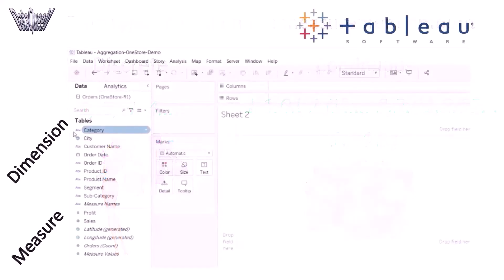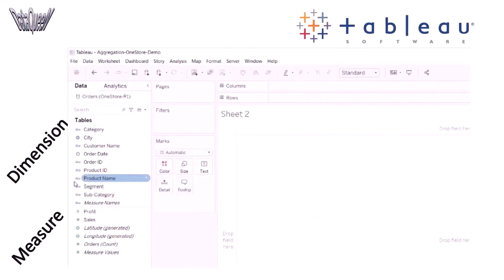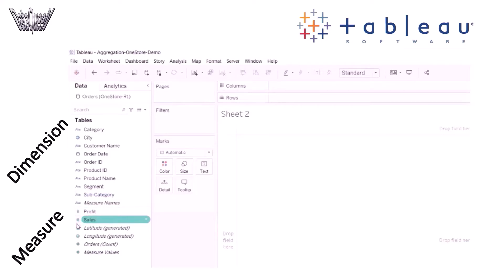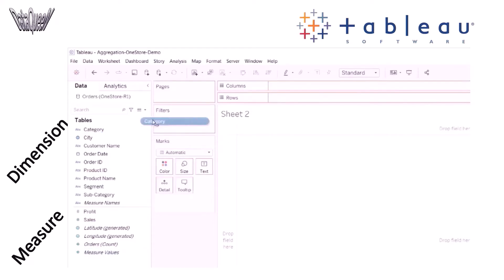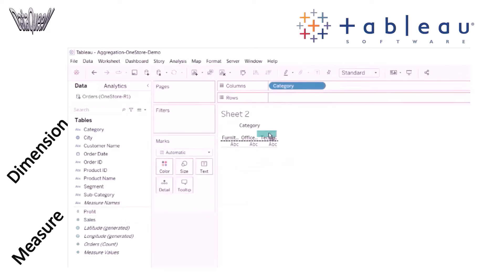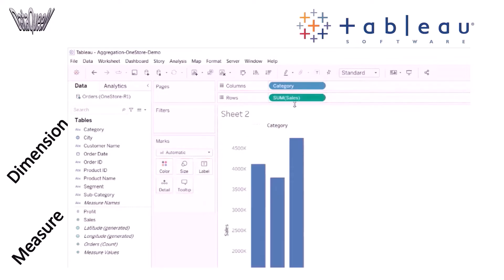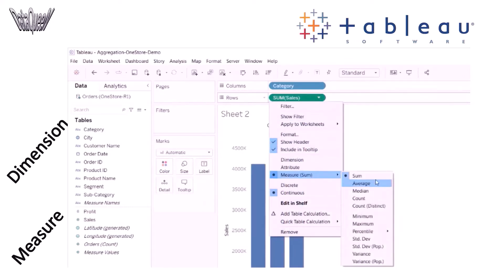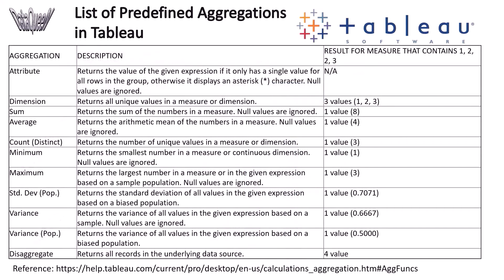In Tableau, the dimensions data field contains qualitative values. You can use dimensions to categorize, segment, and reveal the details in your data. The measure data field contains numeric values — measures can be aggregated. Blue color indicates that the field is treated as a discrete field. Tableau also has a list of predefined aggregation functions; this table is an extract from the Tableau website. We will cover a few of them in this demonstration.